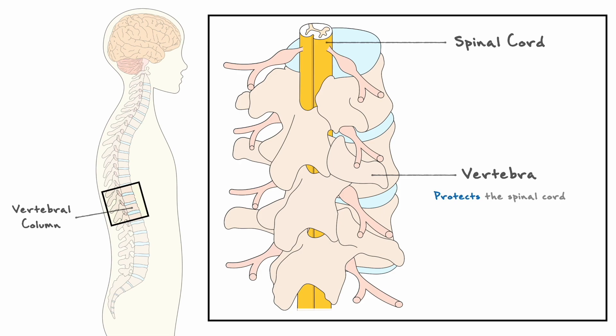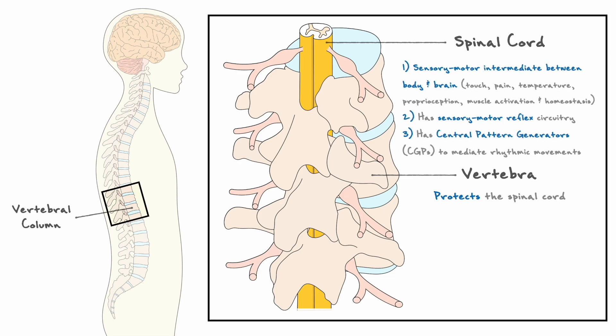The spinal cord has generally three important functions. Through mechanisms we will cover later, the spinal cord constitutes an intermediate for sensory and motor functions such as touch, pain, temperature, proprioception, and muscle activation, as well as homeostatic functions in the case of the autonomic nervous system. Moreover, the spinal cord contains sensory motor reflexes that allow us to swiftly interact with our environment. The spinal cord also contains what are called central pattern generators, which are circuits that produce rhythmic movements such as walking.